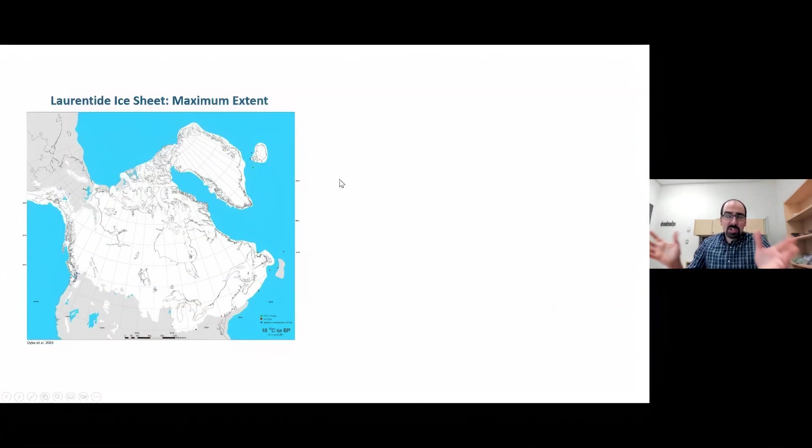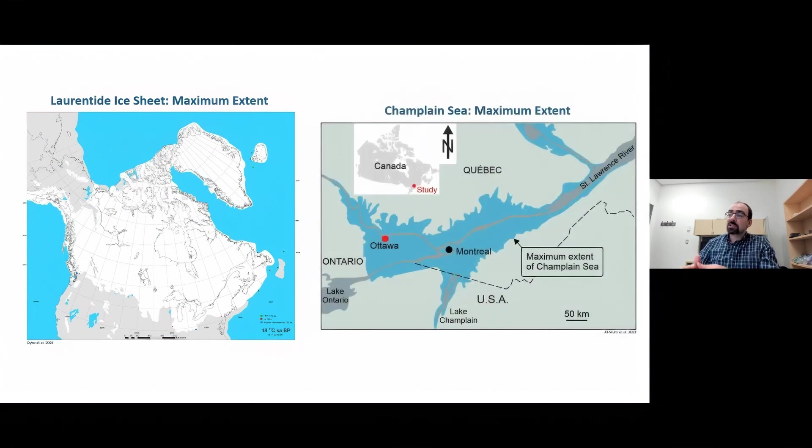To set the stage for the geologic context, this is the Laurentide Ice Sheet. At its maximum extent, it was about two to three kilometers thick in certain parts of Canada. Upon melting, it produced substantial volume of meltwater discharge. This sediment-laden meltwater was dispersed into the isostatically subsided Champlain Sea Basin, the maximum extent of which is shown in this map. The City of Ottawa is the focus study area for today's talk.